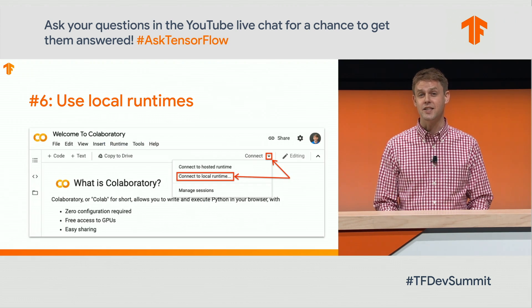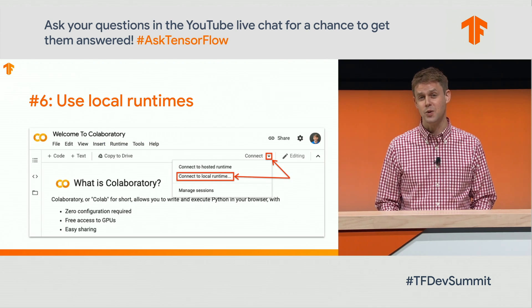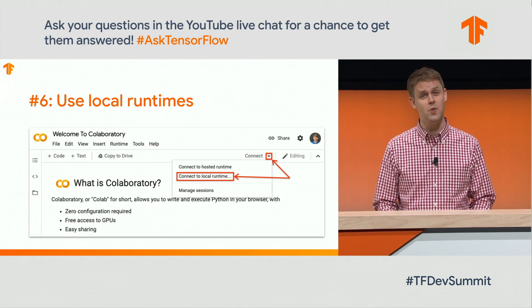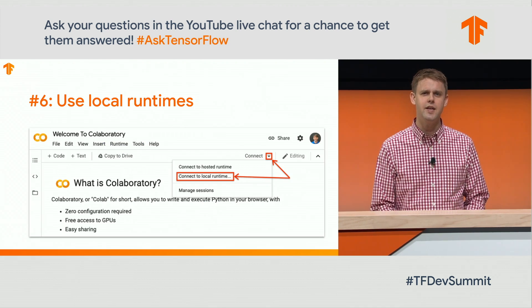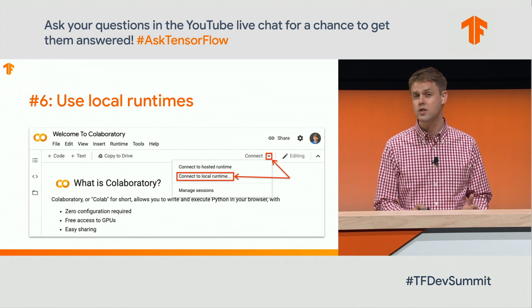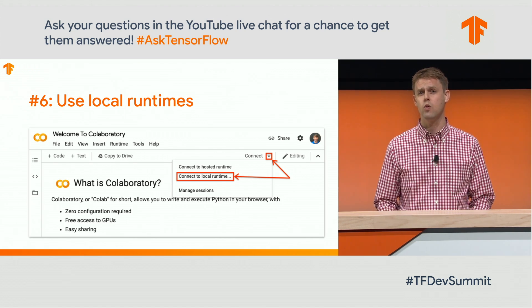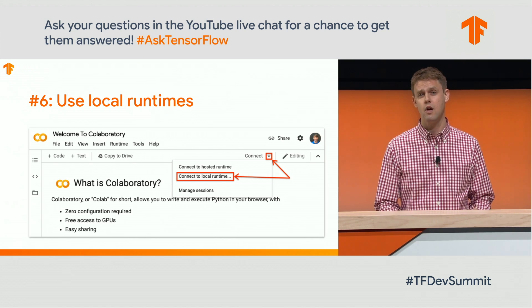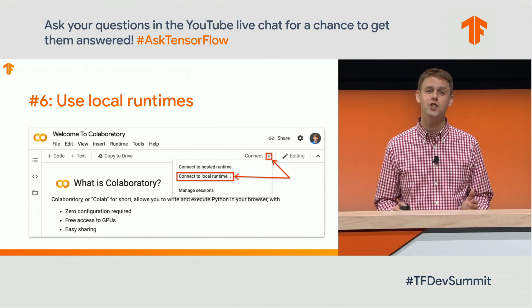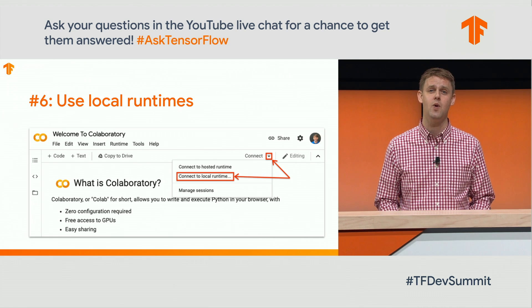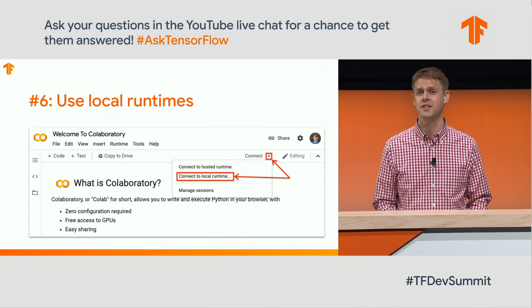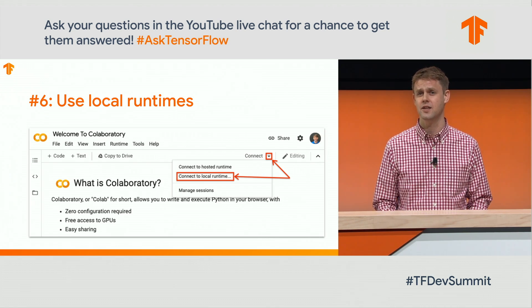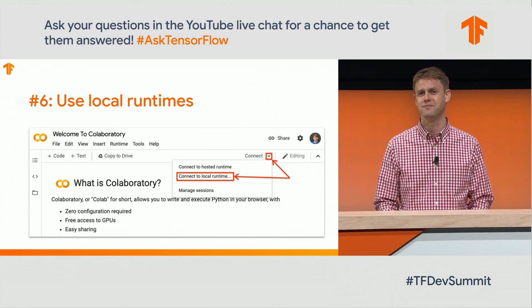Number 6: use local runtimes if you want. If you have your own workstation and your own GPUs, perhaps, and you want to run your workload on your own hardware, that's fine — you can still use the CoLab UI with a local runtime. And that's easy to do as well.